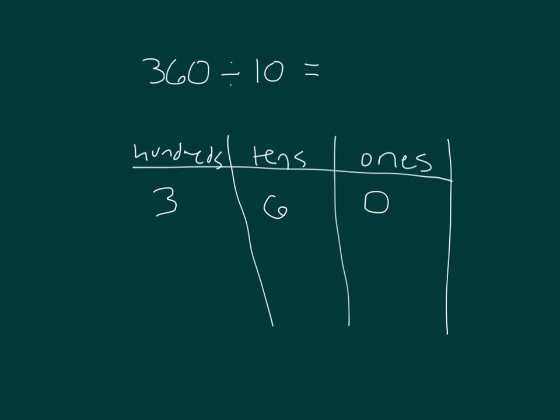We're going to shift our digits, because 100 divided by 10 is 10. And the same thing for 10, those 6 10s divided by 10 is 6 1s. So when we shift our digit, we get 36. Our digits get shifted one place to the right.